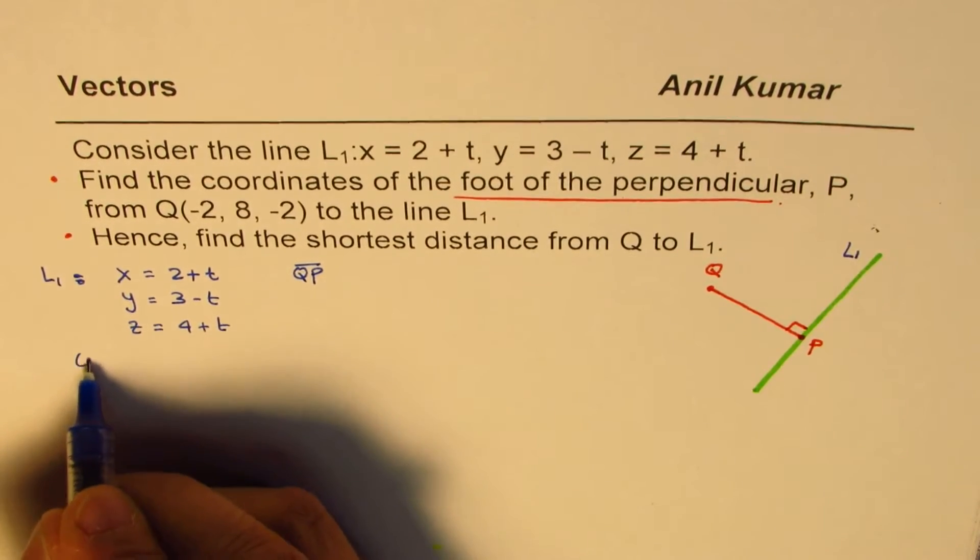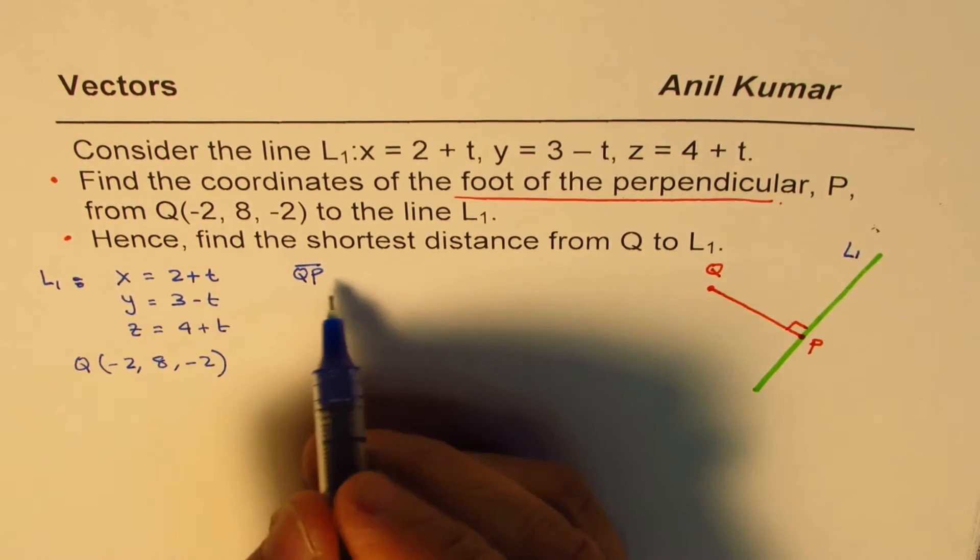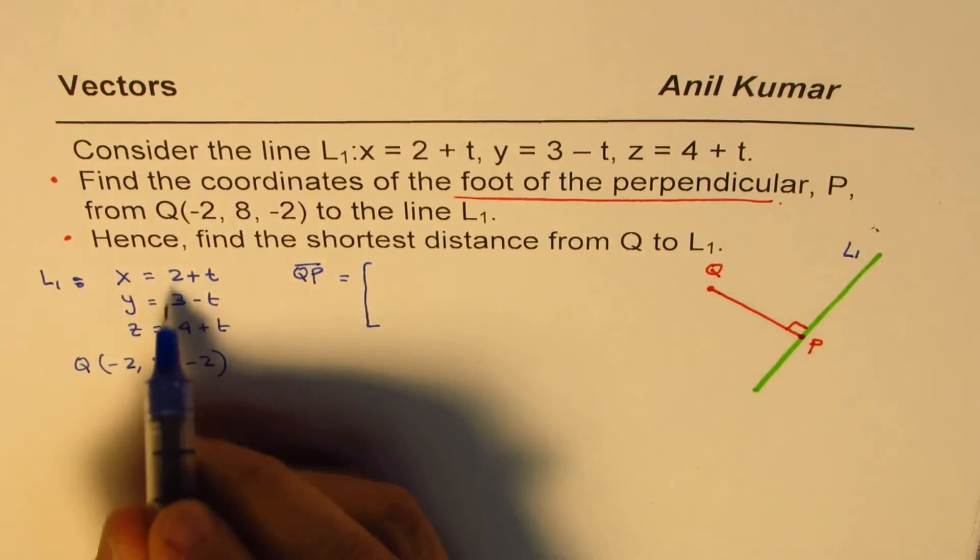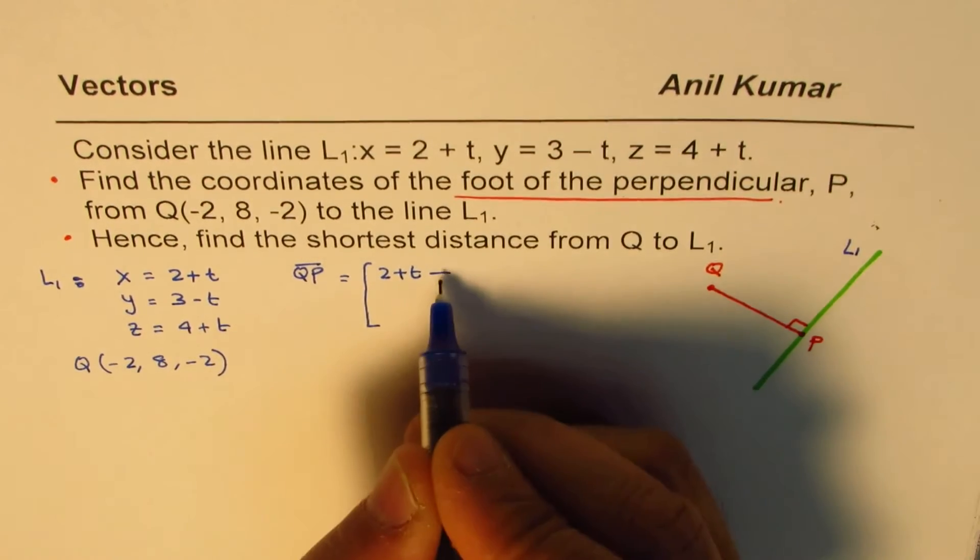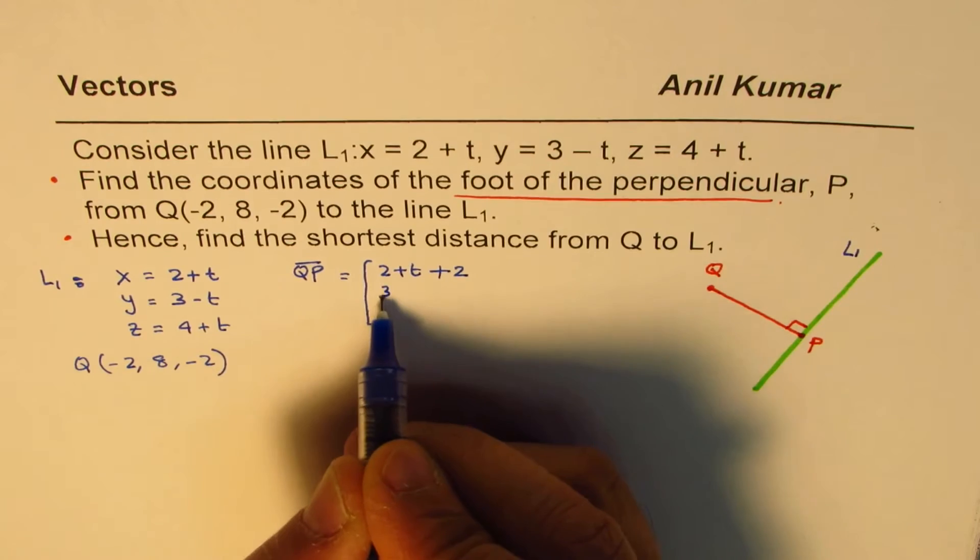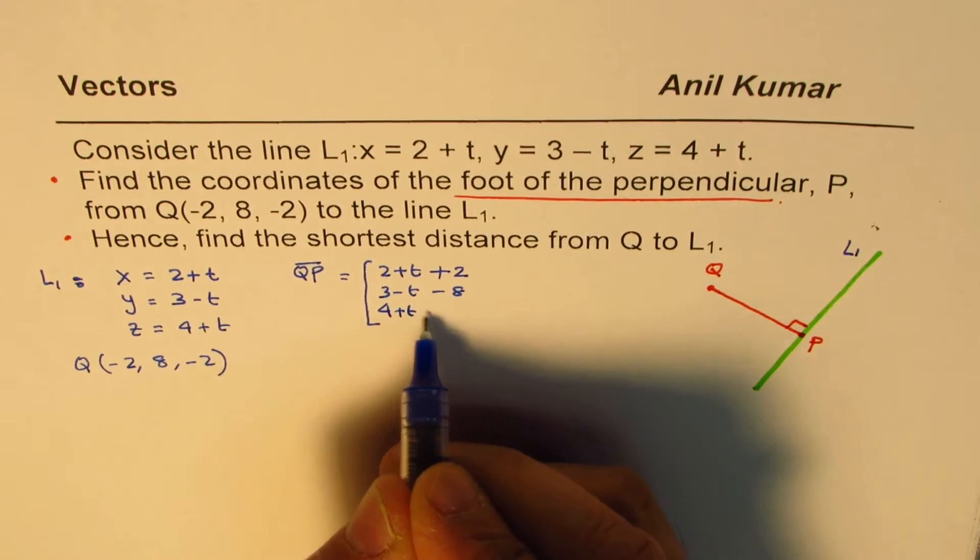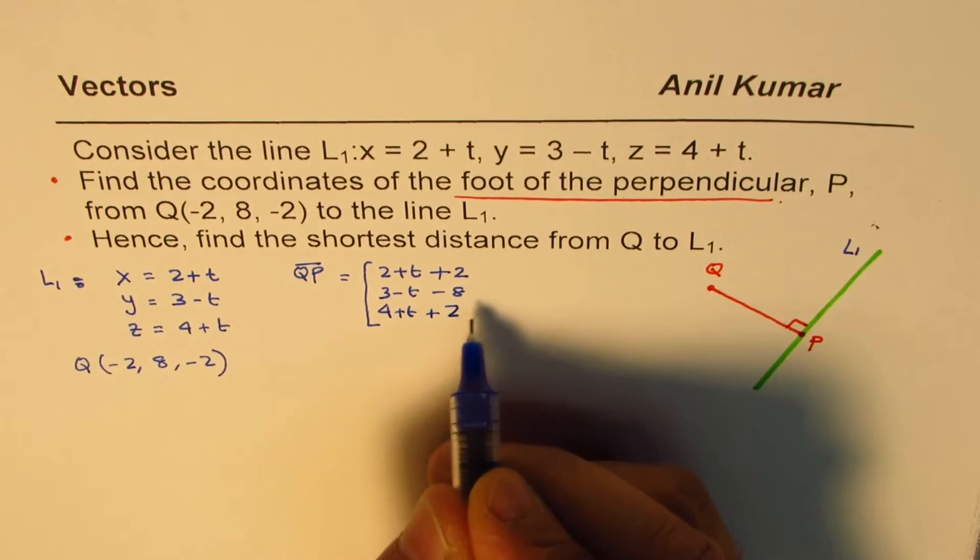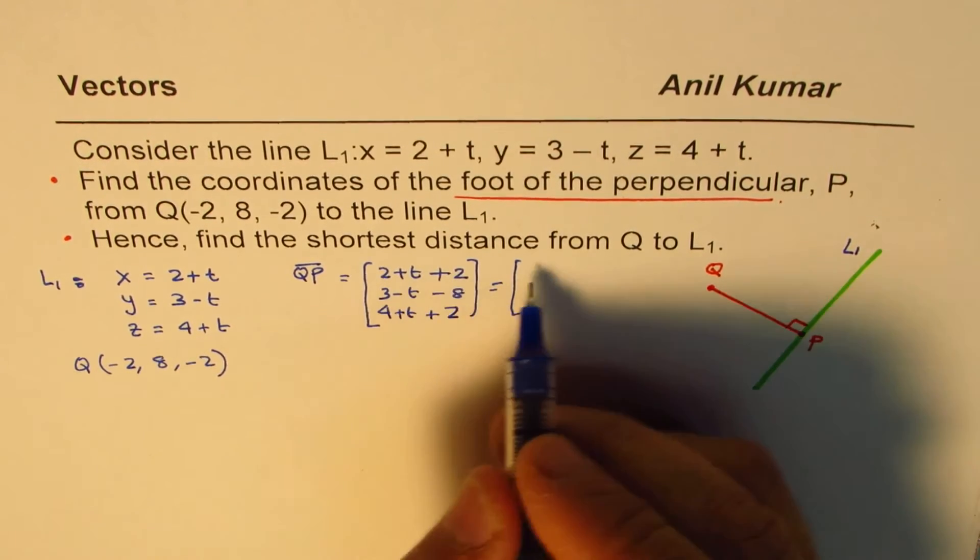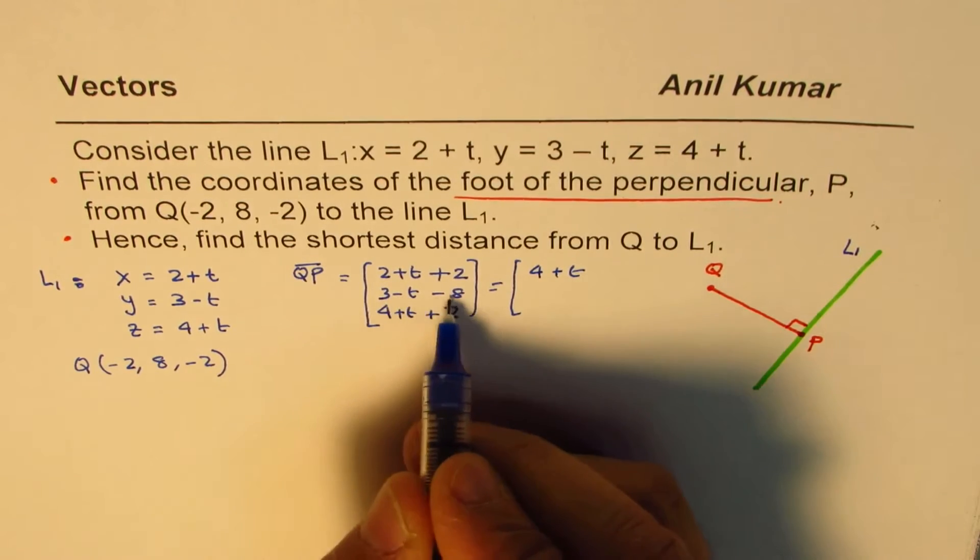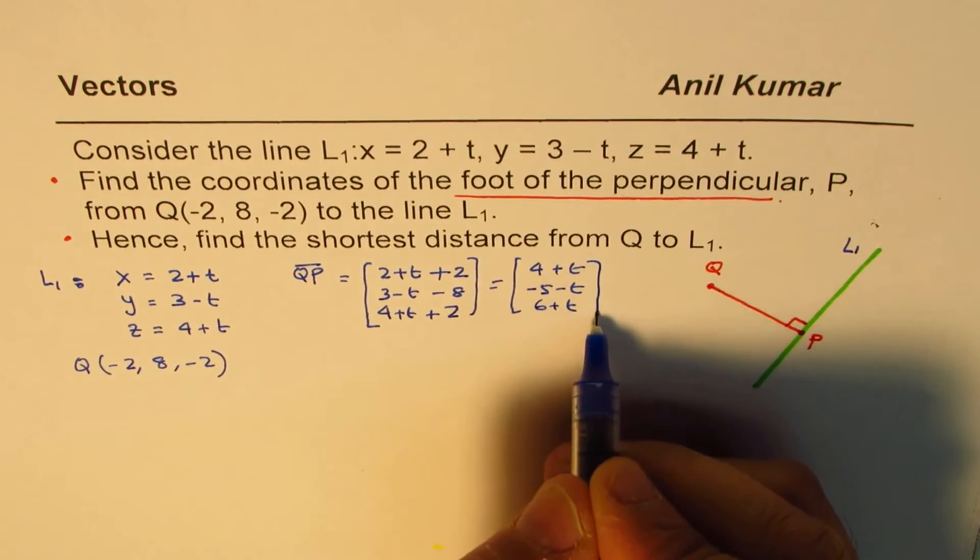Then in that case, what is QP? We know what Q is, we are given Q as (-2, 8, -2). So QP will be equal to this general point minus Q coordinates. So just 2 plus t minus (-2) that gives us 4 plus t, 3 minus t minus 8, and 4 plus t minus (-2). So it is 4 plus t, minus 5 minus t, and 6 plus t. So that is QP.